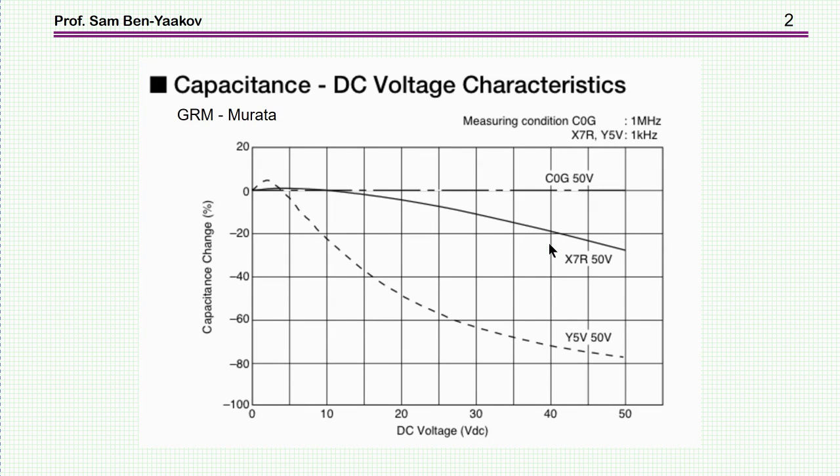Ceramic capacitors are very popular because you can get high capacitance values in small packages. They are based on ceramic dielectric material of different kinds, such as COG, X7R, Y5V. The difference between them is the dielectric constant and the temperature dependence and, among other things, the dependence of the capacitance on the voltage across the capacitor.